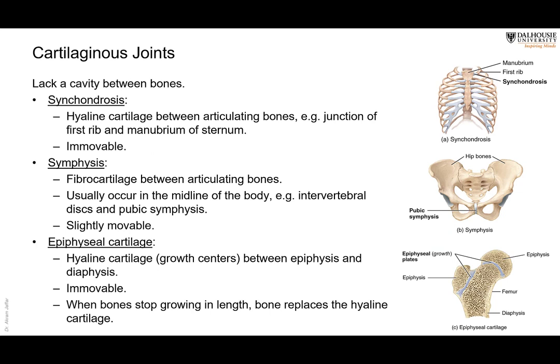In cartilaginous joints, there is cartilage — either a direct articulation between cartilage and bone, which is called synchondrosis, or in the epiphyseal plate between the epiphysis and the metaphysis. These are cartilages that lay down bony tissue, and after a certain age — usually after 21 years — they stop, calcify, and close. This is another union between bone and cartilage, called the epiphyseal cartilage plate.